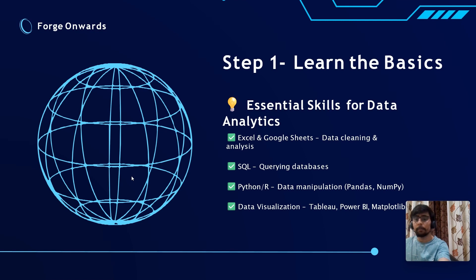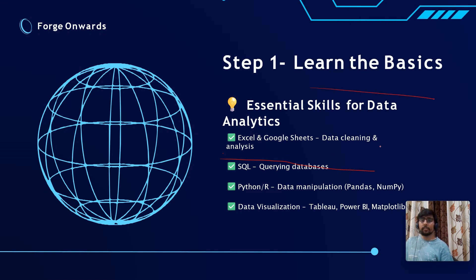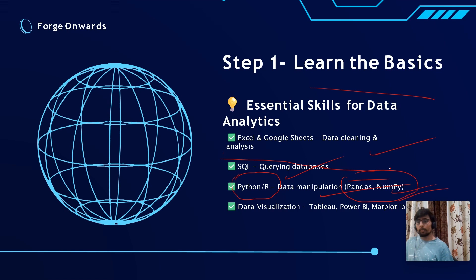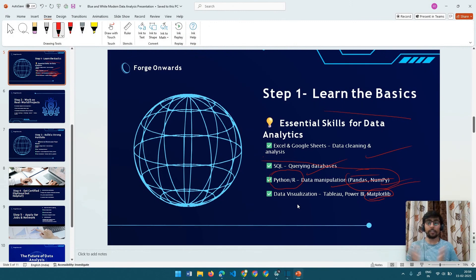Now I will tell you the step-by-step process to become a good data analyst. Step one: build strong foundations. Learn the basics — Excel and Google Sheets, SQL basics including joins and window functions, which are very important topics for data analysis. Then learn the basics of Python and R, and move on to Python libraries like Pandas, which is great for data preparation and exploration, NumPy for mathematical calculations, and Matplotlib for visualizations.